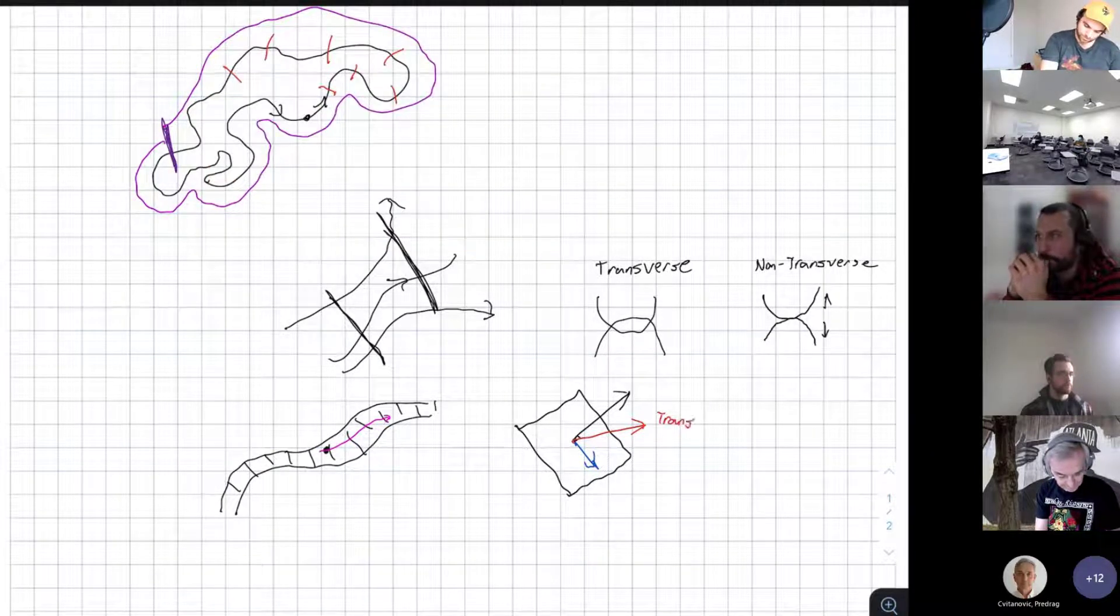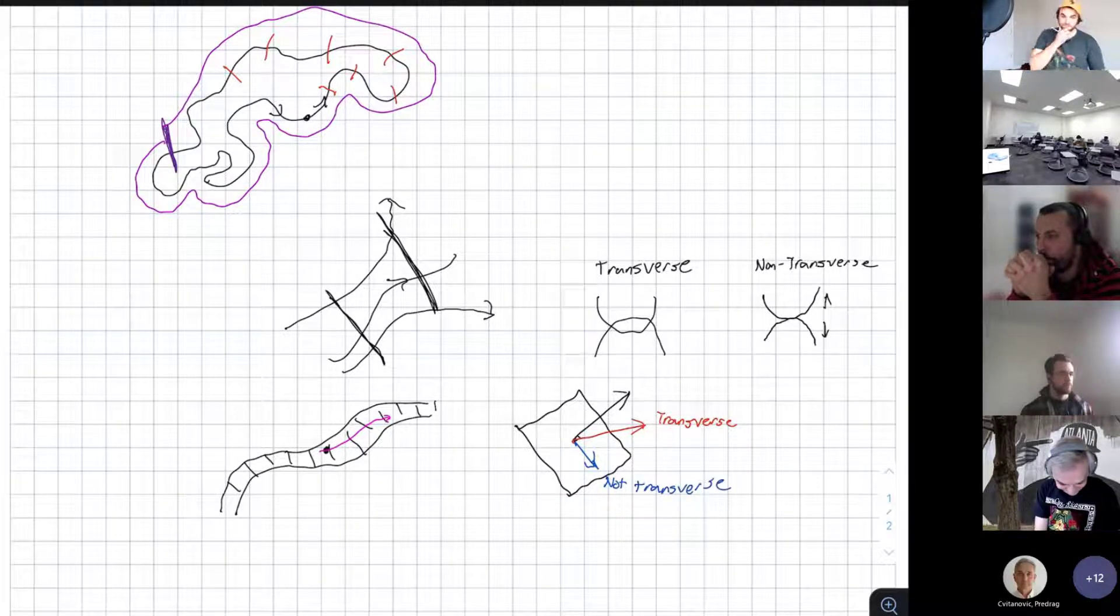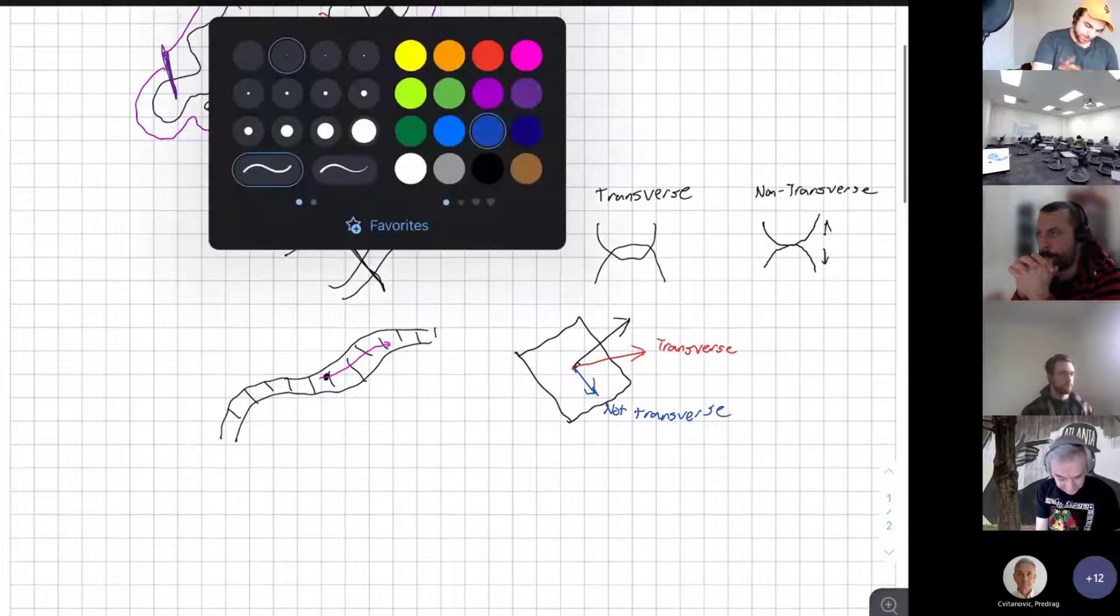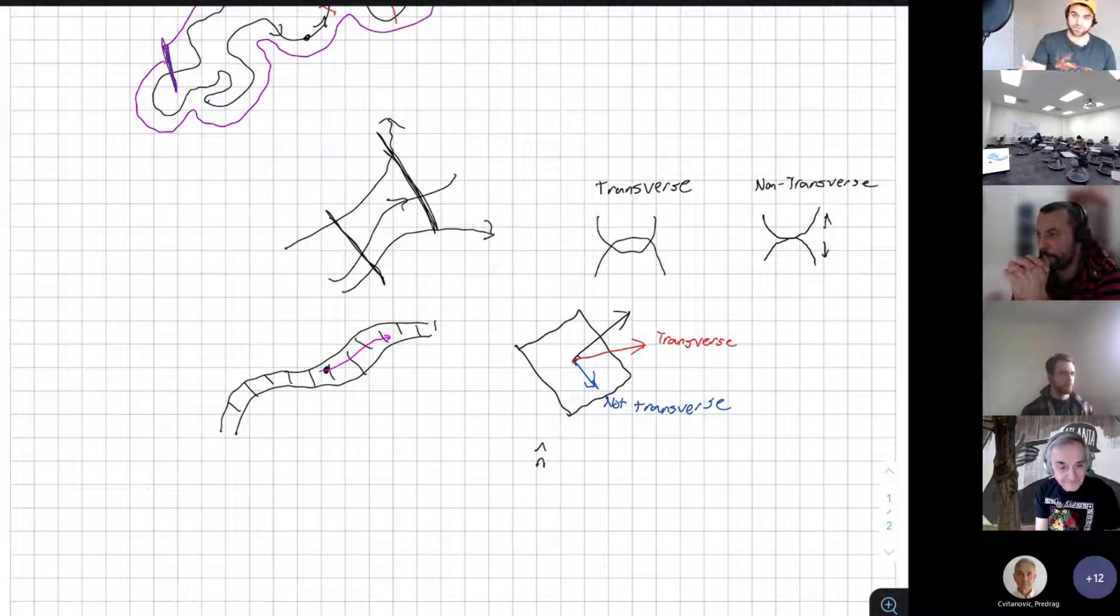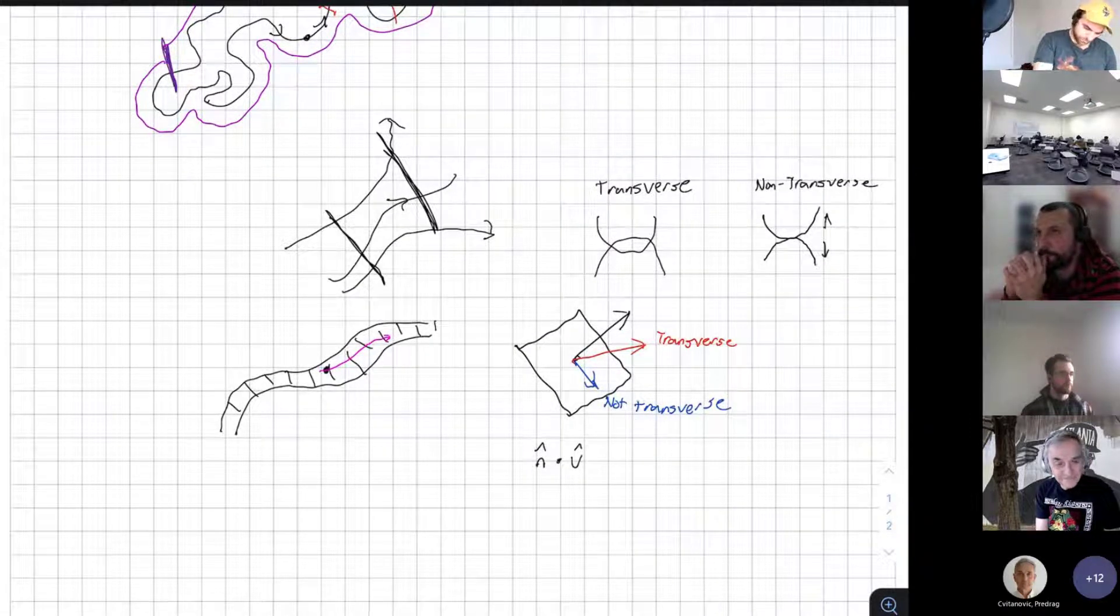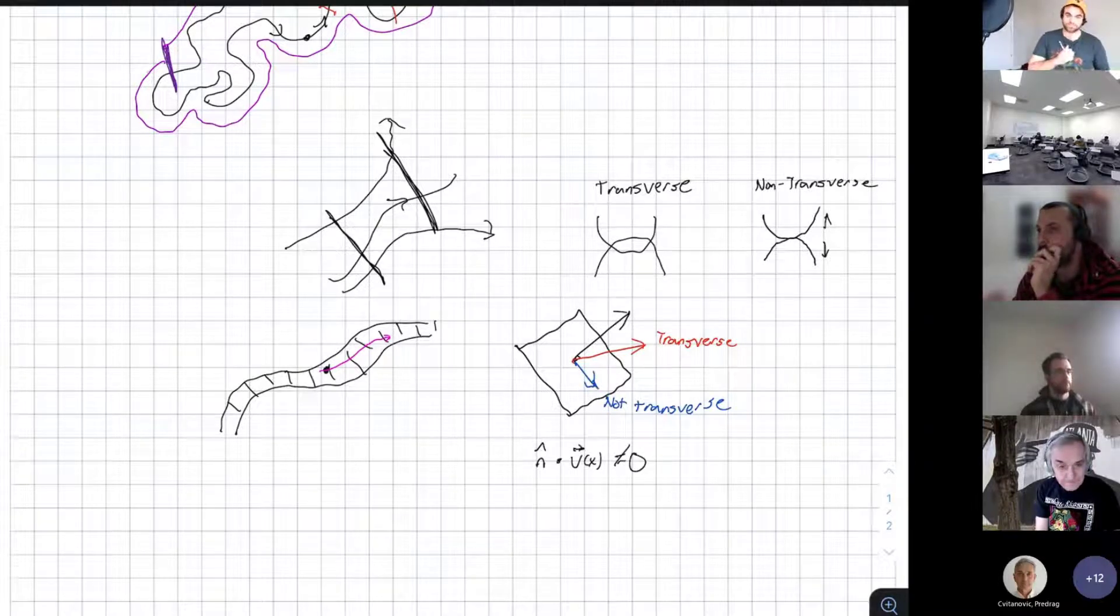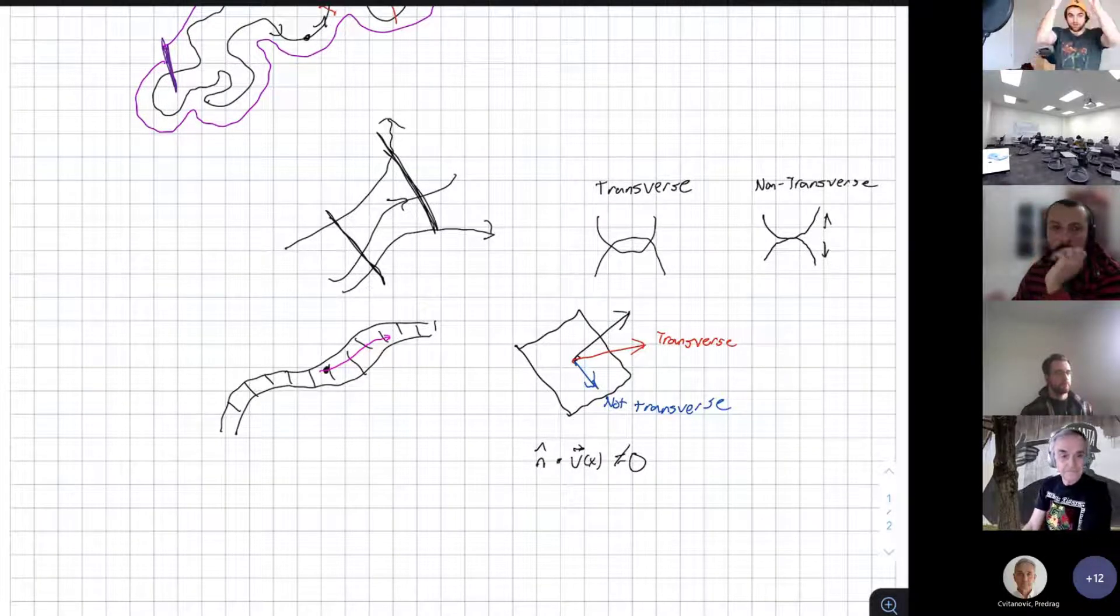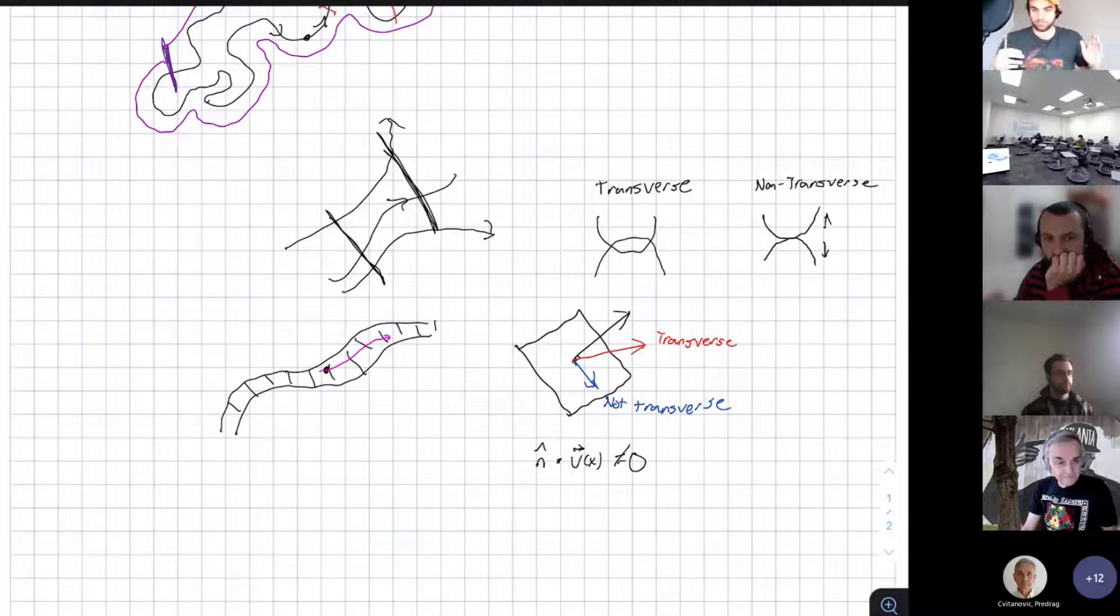So we're computational people. We want to be able to actually do these things. How do we ensure when we're dealing with some computational program that we actually have this transversality picture? And the way to imagine that is if this is some sort of hypersurface, and what does that mean? That just means that this is the graph of some function, or it's just some co-dimension one manifold, which means it's just one dimension lower than the space that it lives in. Those are always going to have an associated normal vector.